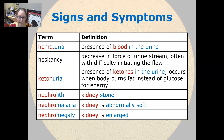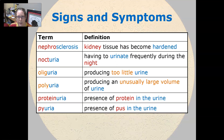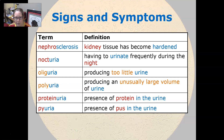Nephromegaly is a kidney that is enlarged. Nephrosclerosis is a kidney tissue that has become hardened. Nocturia is having to urinate frequently during the night.